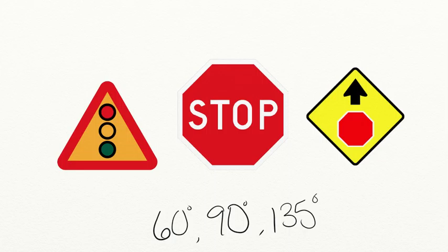We see angles around us every single day, and one of the ways we see angles is on signs. I have three signs on the screen: one sign is made of 60-degree angles, one is made of 90-degree angles, and one is made of 135-degree angles. Using our strategies, I want you to tell me which sign is made of which angles.